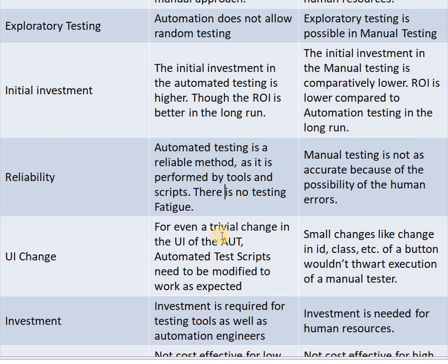Next parameter is UI change. For even a trivial change in the UI of the application under test, the automated test script needs to be modified to work as expected. But in manual testing, small changes like a change in ID, class, etc. of a button would not block execution by a manual tester.